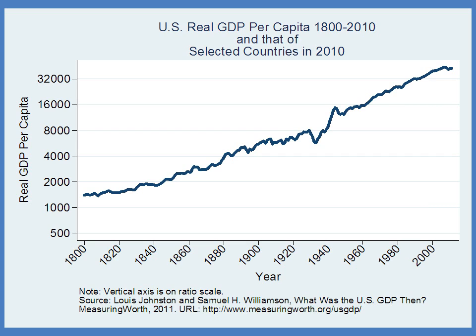We've graphed this in an interesting way. Notice on the vertical axis we have doublings — this is called a ratio scale. From 1,000 to 2,000 is a doubling; from 2,000 to 4,000 is a doubling; from 4,000 to 8,000 is a doubling, and so forth. One of the reasons we've done that is it makes it easier to compare growth rates. A straight line on this graph is a line of constant growth.